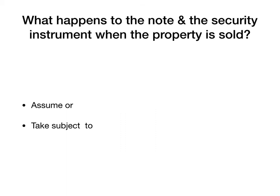When property is sold, what happens to the note and the security instrument? The seller can satisfy the mortgage — pay it off with the proceeds of the sale — and that's typically what happens. If the seller doesn't do that, the purchaser can either assume the debt or take subject to the debt.